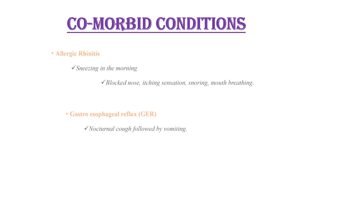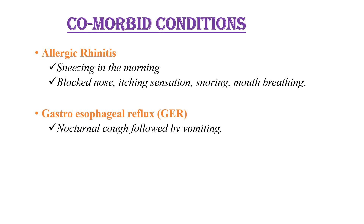When treating asthma, we should always think of comorbid conditions if there is no appropriate response to management. These comorbid conditions include allergic rhinitis and gastroesophageal reflux. Allergic rhinitis is characterized by sneezing, malaise in the morning, blocked nose, itching sensation, snoring, and mouth breathing. Gastroesophageal reflux presents with optional cough followed by vomiting.